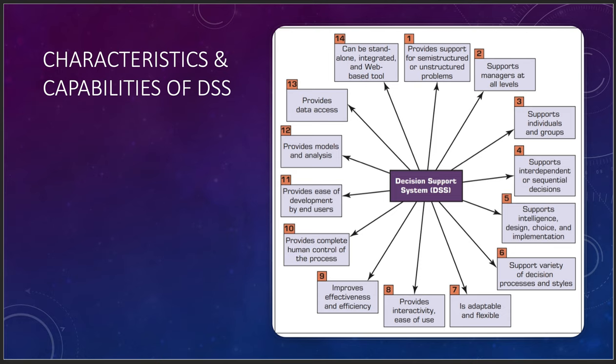Tenth: provide ease of development by end users. With tools like Cognos, Tableau, Power BI, and Salesforce, you use APIs or report writers to build things. All are well documented once you understand the API, the fields, and the underlying data. Eleventh: provide models and analysis — there may be pre-canned reports and pre-built models, but you may also have to train new models. We'll be retraining models constantly depending on where we are in the machine learning process.